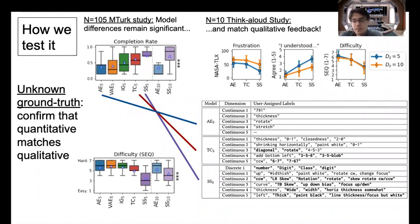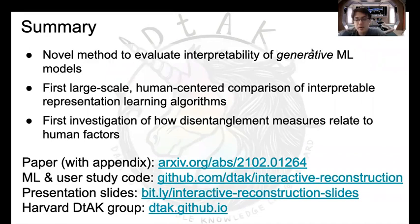Overall, we really take pains to validate that our metric is actually measuring model understanding, or at least something intimately correlated with it, and that this continues to hold for a variety of models trained with a variety of methods on a variety of datasets with a variety of characteristics. This lets us provide the first major comparison of interpretable representation learning methods on non-synthetic data. It also lets us evaluate how synthetic disentanglement metrics relate to human factors.